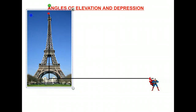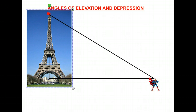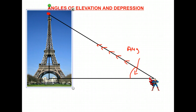What Superman is going to do is look up to the top of the Eiffel Tower. We have a big red dot at the top to indicate the top of the Eiffel Tower, and he's going to draw a line of sight right to the top. This is our line of sight, and the angle formed between his line of sight and the horizontal is called the angle of elevation.